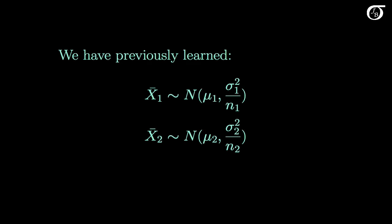In our previous discussion about the sampling distribution of the sample mean, we learned that the sample mean has a mean equal to the mean of the population from which we are sampling, and a variance equal to the variance of the population divided by the sample size. The sampling distribution of the sample mean will be normal regardless of sample size if we are sampling from a normally distributed population. If we are sampling from a distribution that is not normal, the sampling distribution will be approximately normal provided we have a large sample size — this is what the central limit theorem told us.